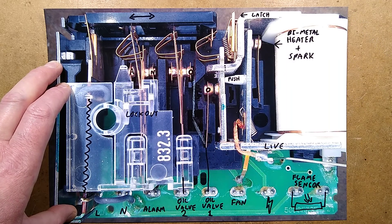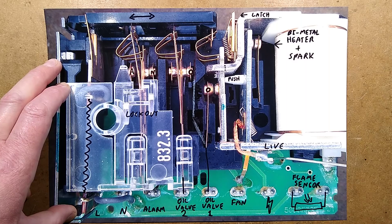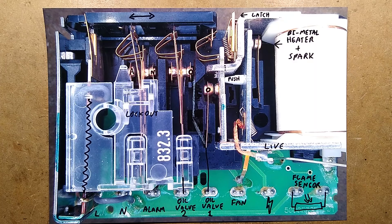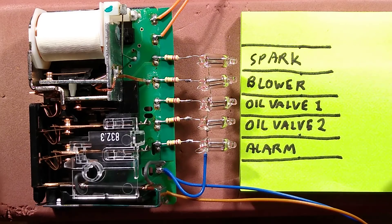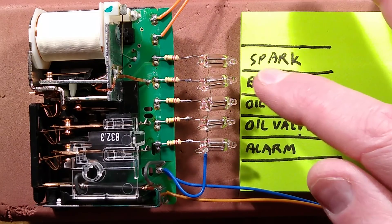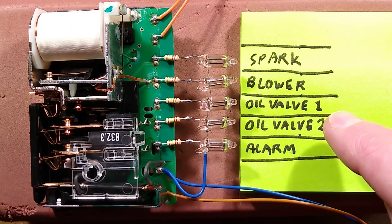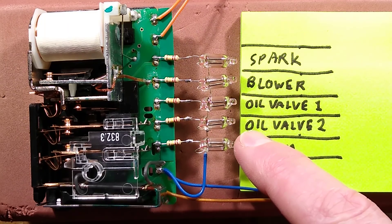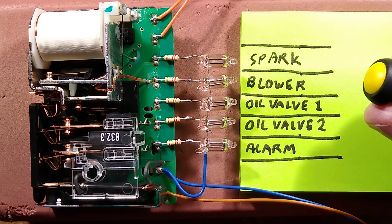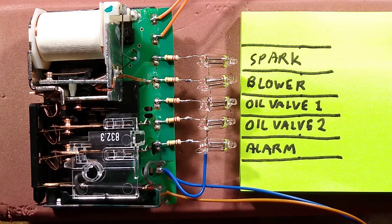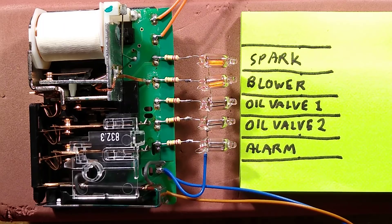Right, now I'm going to show you the thing actually operating. To show operation, I've connected five neon indicator lamps: the spark, the blower, which is powered all the time as long as this thing is powered, oil valve one, oil valve two, and the alarm neon. To emulate the spark being lit, I've wired a little button across it. So at the correct point in the sequence, I shall push this button and it will indicate the spark has occurred. It is now active.